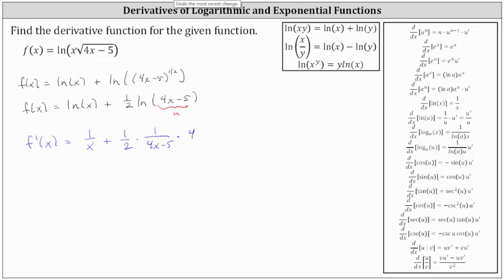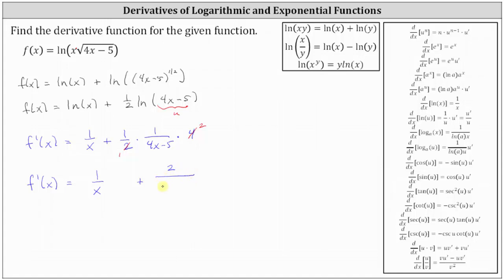Now let's determine this product. Before we multiply, notice we can simplify: four and two share a common factor of two, giving us two over two, which simplifies. This gives us f prime of x equal to one divided by x plus two divided by the quantity four x minus five.